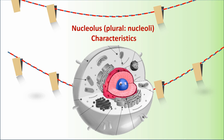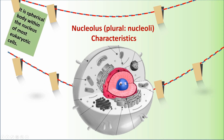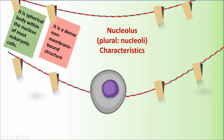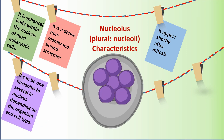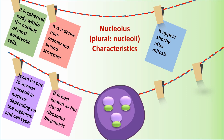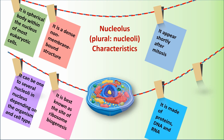Nucleolus characteristics. It is a spherical body within the nucleus of most eukaryotic cells. It is a dense, non-membrane-bound structure. It appears shortly after mitosis. It can be one nucleolus to several in a nucleus, depending on the organism and cell type. It is best known as the site of ribosome biogenesis. It is made of proteins, DNA, and RNA.